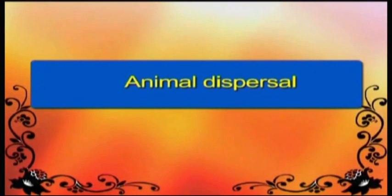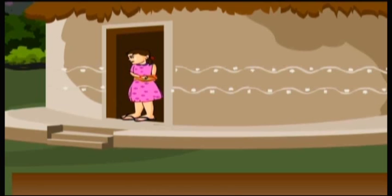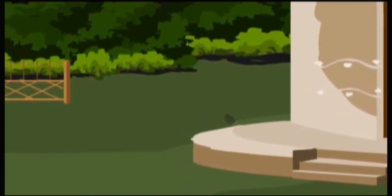Animal dispersal. We enjoy eating fleshy fruits such as mango, papaya, cherry and guava. After eating, we throw these seeds away. This is one way of helping the plants to disperse their seeds.